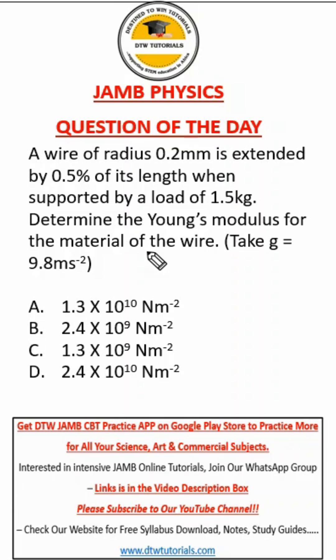Hello and welcome to DTW Tutorials. In today's video we have a JAMB physics question here. It says a wire of radius 0.2 millimeter is extended by 0.5% of its length when supported by a load of 1.5 kilograms.